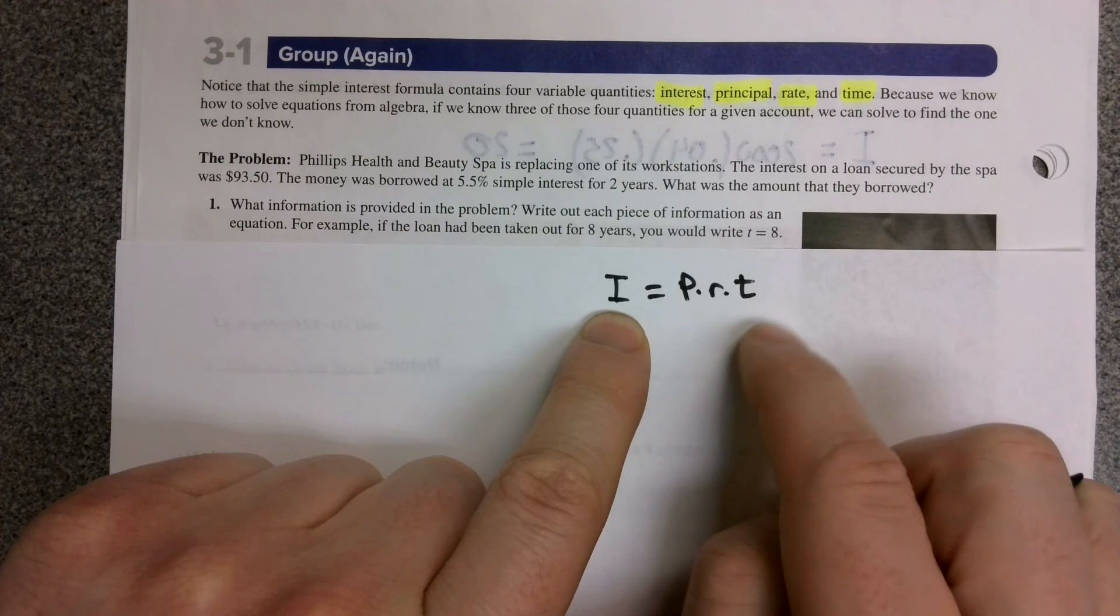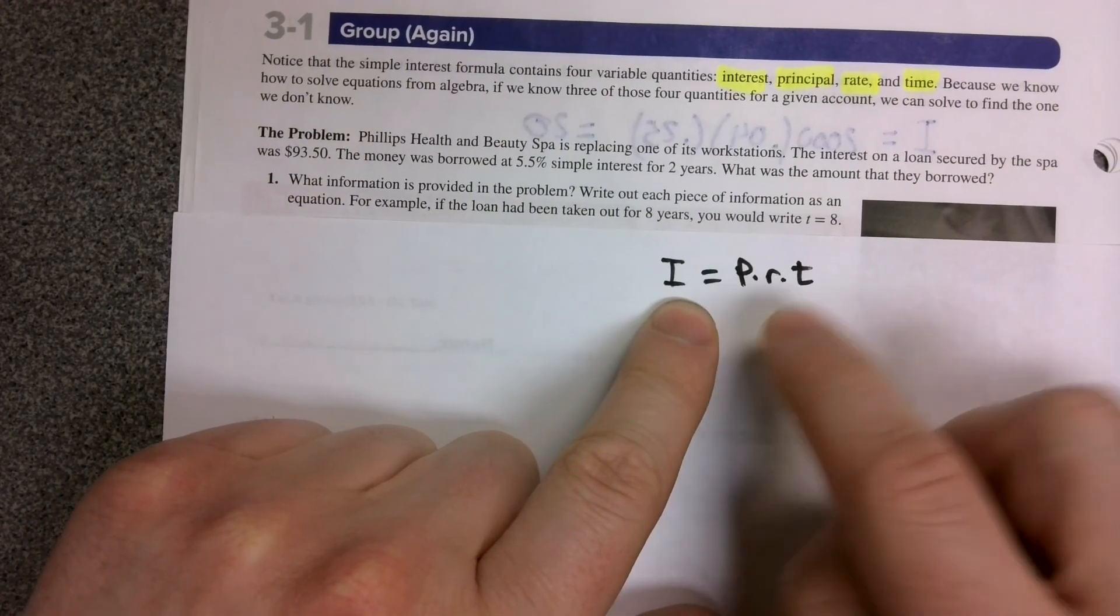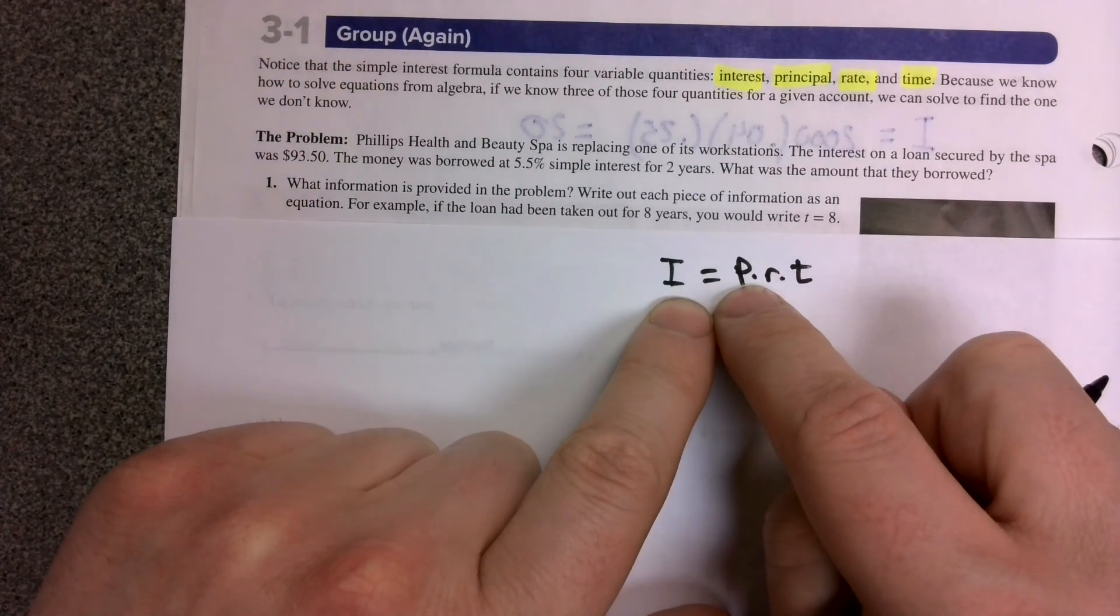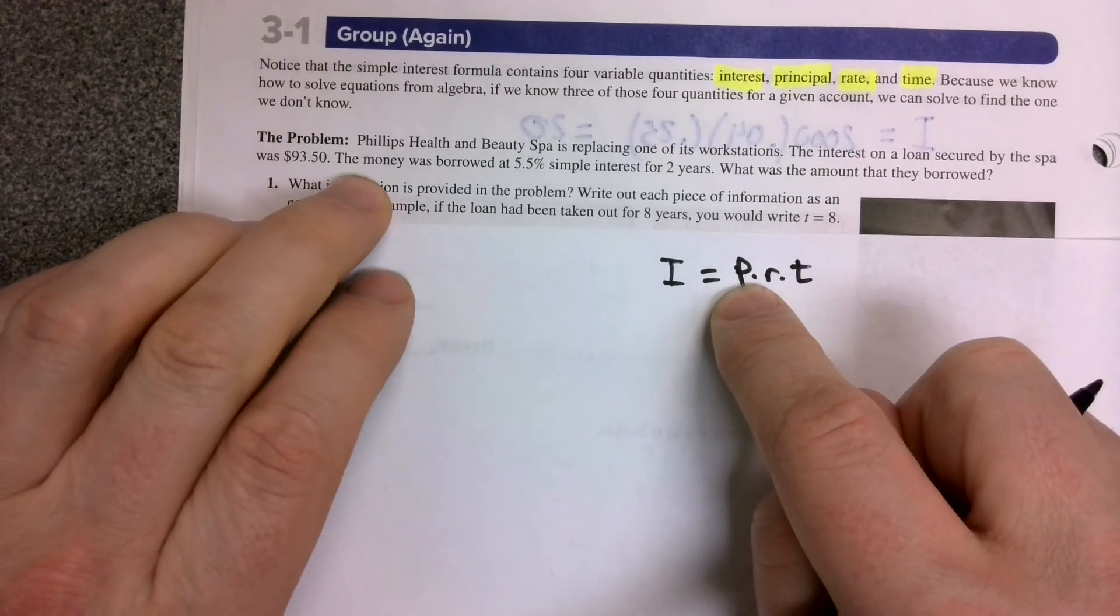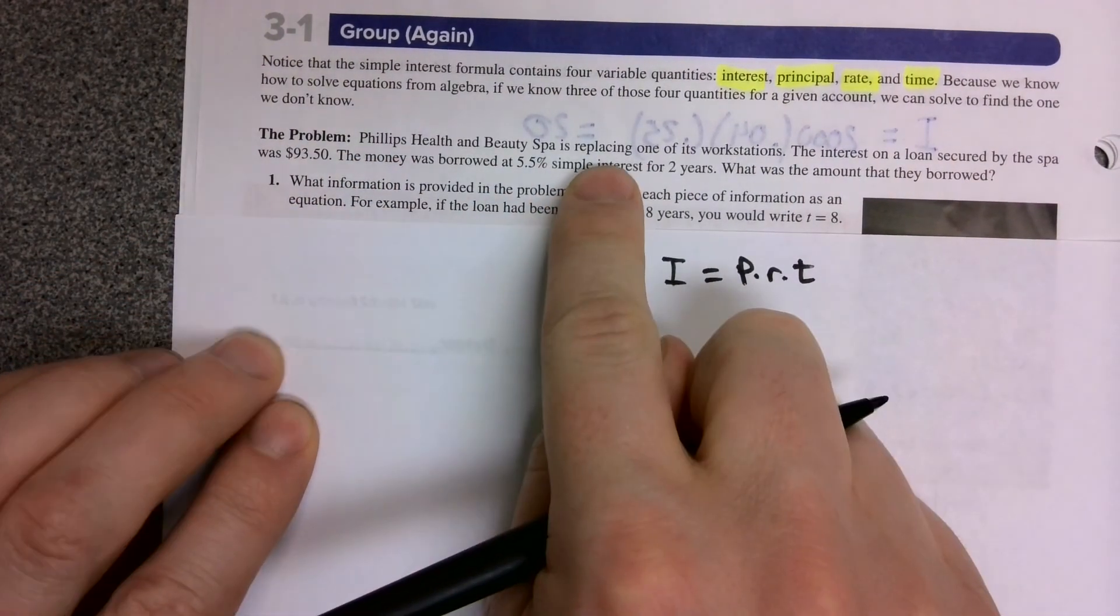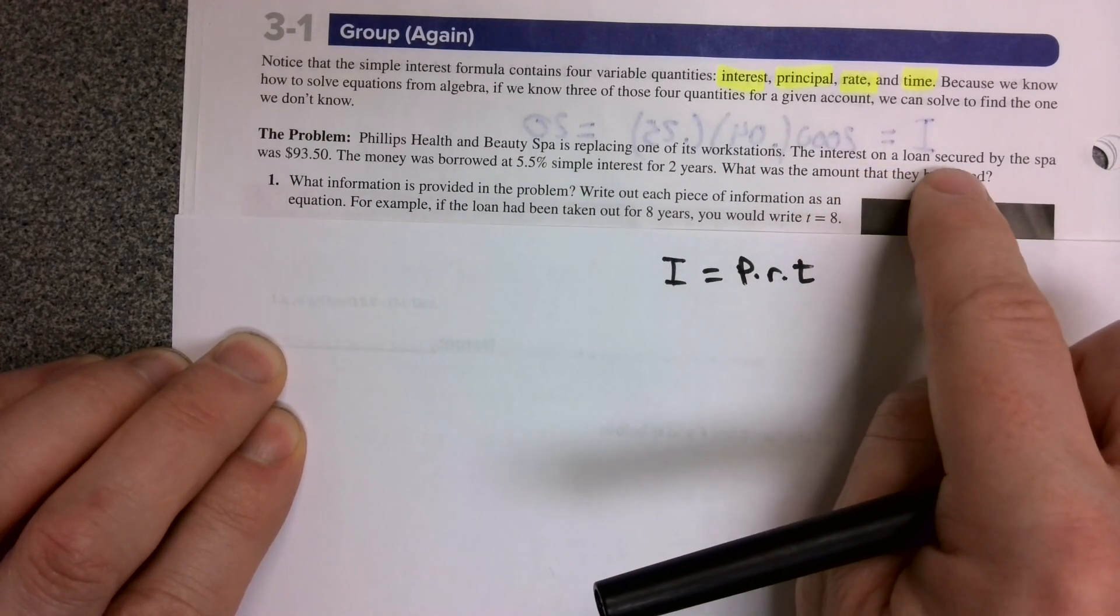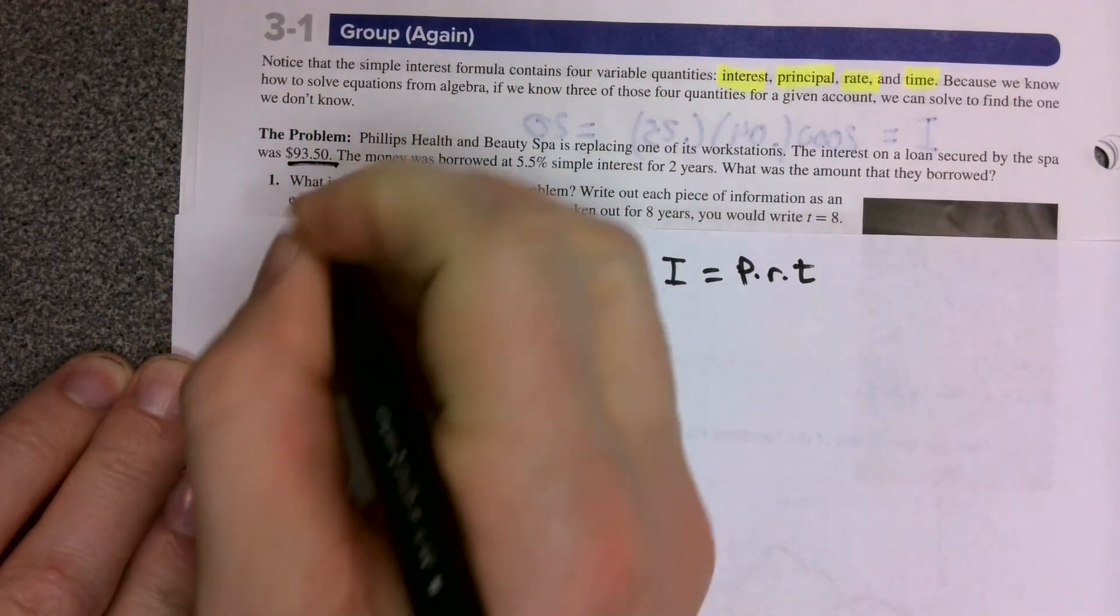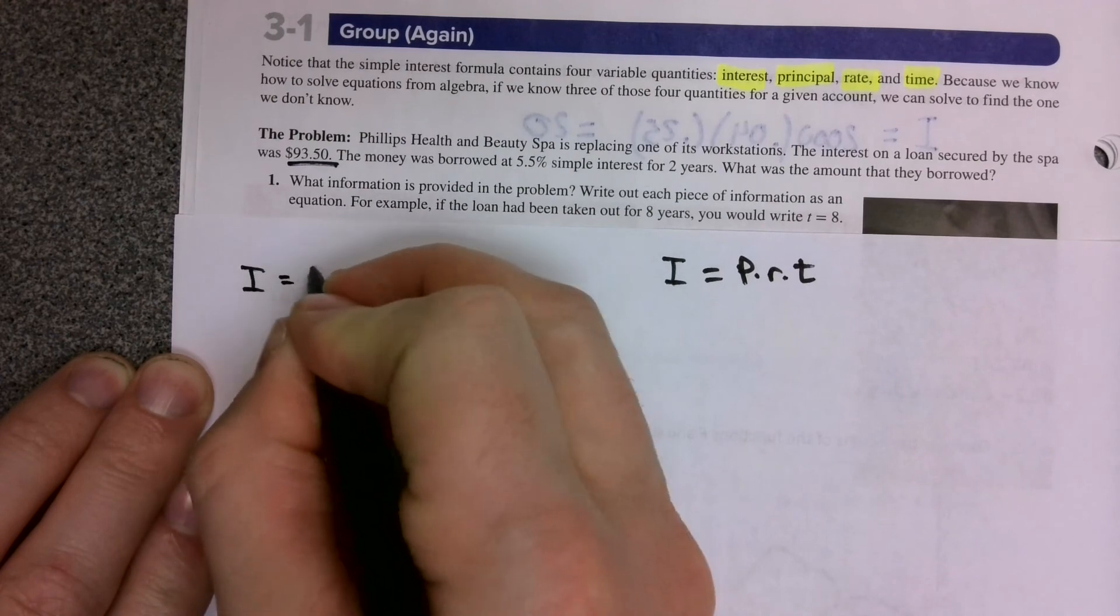What if we wanted to find the amount of principle we would have to borrow in order to only have to pay a certain amount of interest? Notice this problem. The Philips Health and Beauty Spa is replacing one of its workstations. The interest on a loan secured by the spa was $93.50. That amount, that $93.50, that is our I.